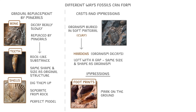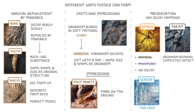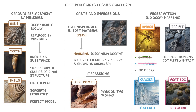Very occasionally, fossils can form by preservation, where no decay happens at all. This happens when organisms get stuck in amber or tar pits, and because there's no oxygen or moisture, no decay can take place, so the organism remains completely intact. It can also happen in glaciers, where it's too cold for the microorganisms that normally carry out the decay process to survive, or in peat bogs, where it's too acidic for microorganisms.